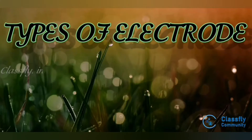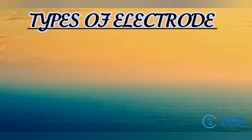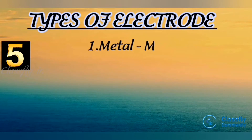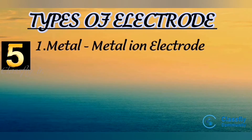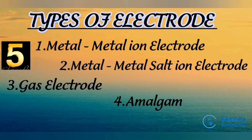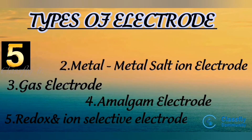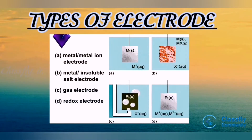There are mainly five types of electrodes. First, metal-metal ion electrode. Second, metal-metal salt ion electrode. Third, gas electrode. Fourth, amalgam electrode. Fifth, redox and ion selective electrode. Let's see each in detail.